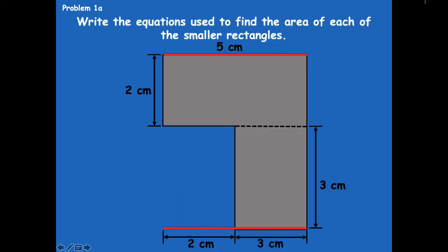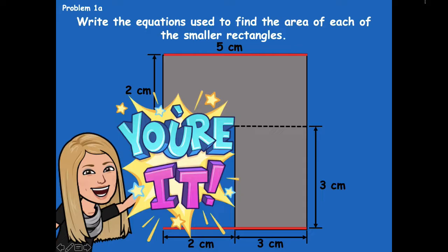Write the equations used to find the area of each of the smaller rectangles. So go ahead, pause the video, and find the area and equation for each of the smaller rectangles. Remember, we're doing length times width. So go ahead and pause the video, write your equation for each rectangle, and find the area of each rectangle, then click play when you're ready to go over it together.